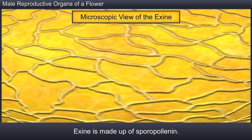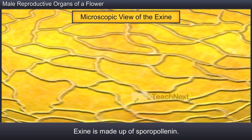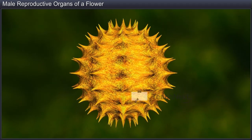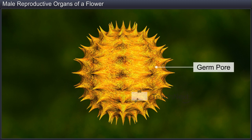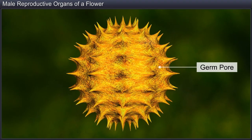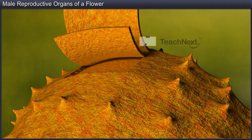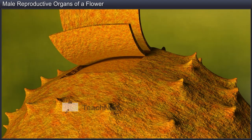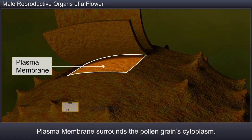Exine, the hard outer layer, is made up of sporopollenin, a tough organic material capable of resisting high temperatures, strong acids, alkalis and all natural enzymes. Hence, pollen can be well preserved as fossils. However, sporopollenin is not present in the germ pore, an aperture present in the exine through which we see the germination of the pollen tube. Intine, on the other hand, is a thin and continuous inner layer of wall composed of cellulose and pectin. On the inner side of the intine is the plasma membrane that surrounds the pollen grain's cytoplasm.